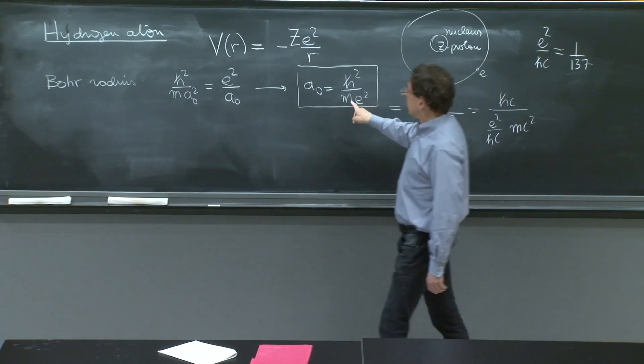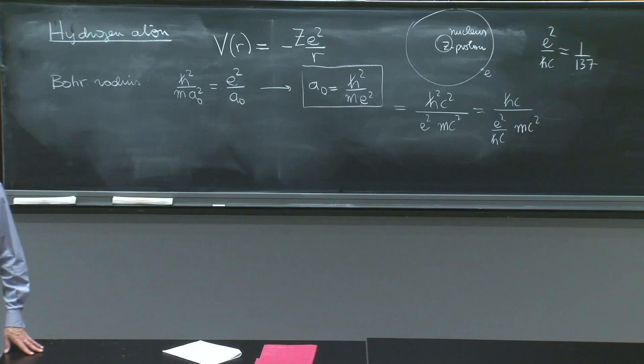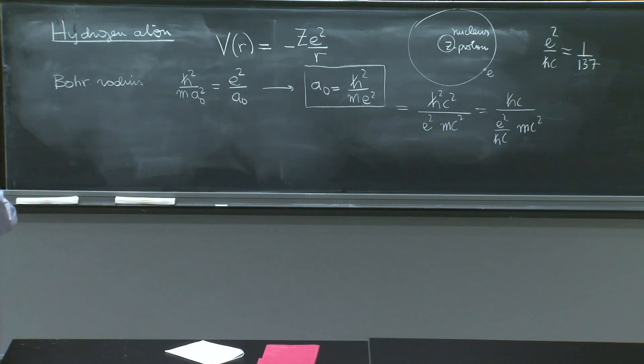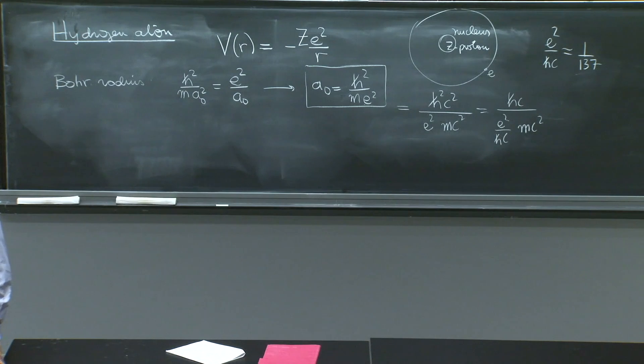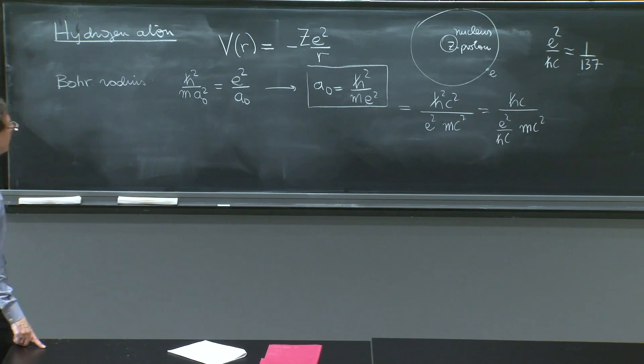Now in here, what mass should we put? I will not be all that careful. It should really be the reduced mass. But it differs by a factor of one part in 1,000 or less even from the mass of the electron, so I'll put just the mass of the electron.